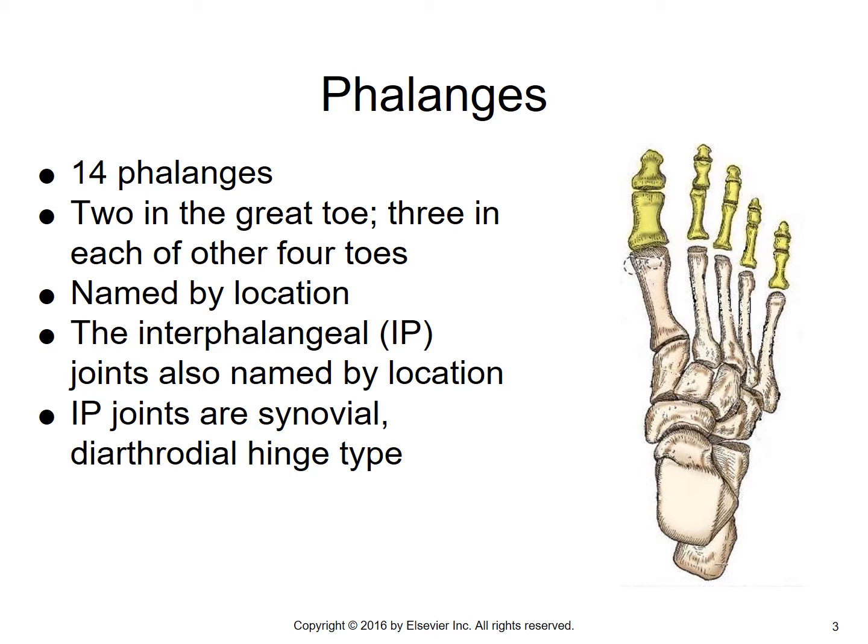We want to keep in mind that the IP joints are synovial diarthrodial hinge joints. And a total of how many in each foot? There would be nine — one for the great toe and two each for the remaining four toes — so a total of nine interphalangeal joints, all being diarthrodial hinge joints.